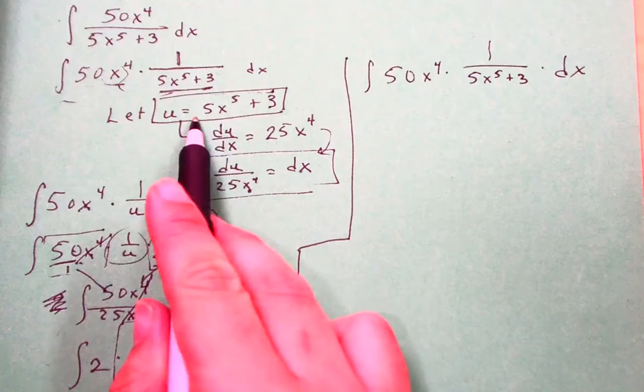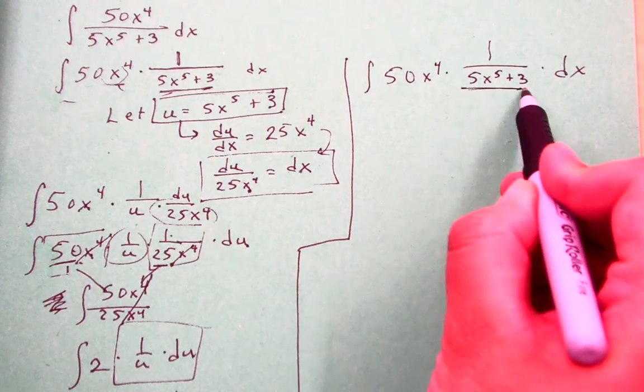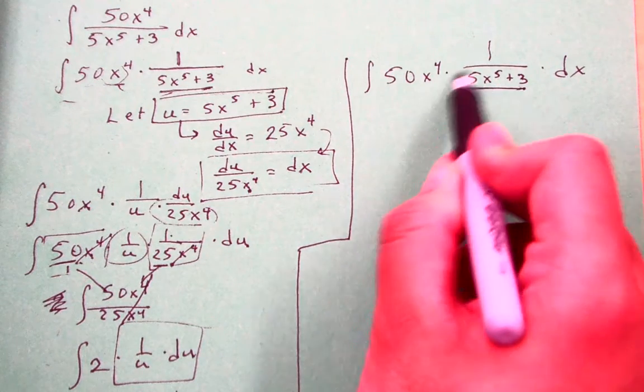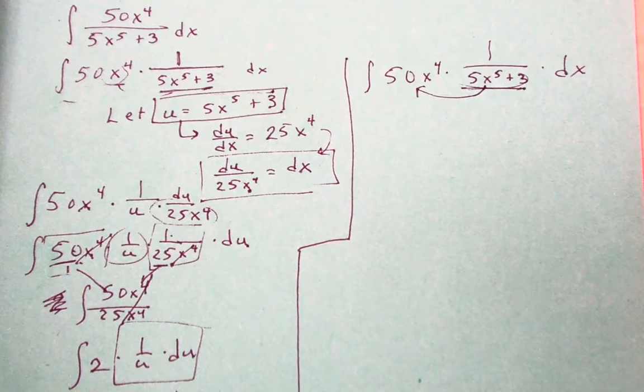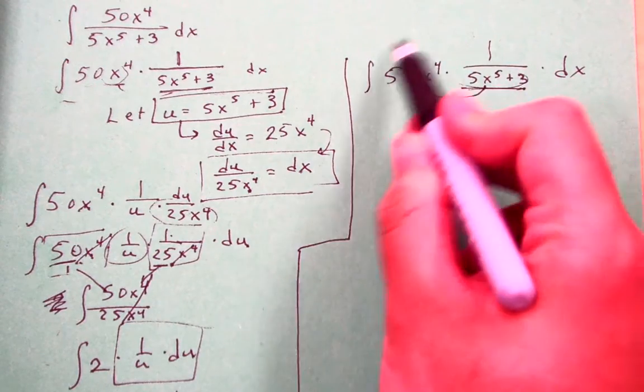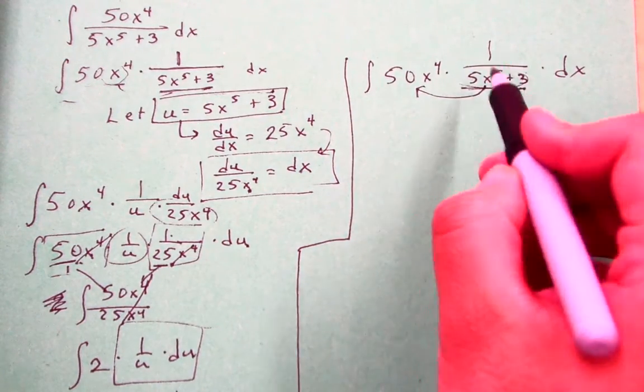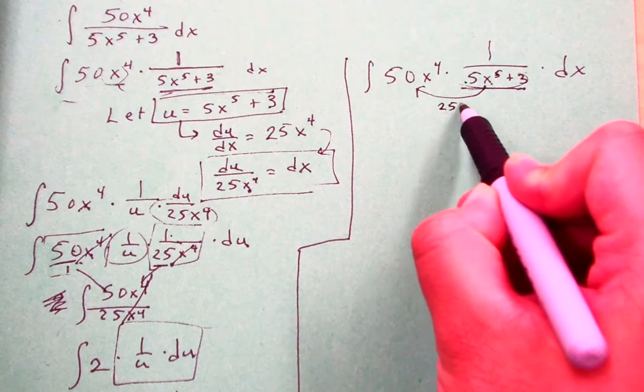I rewrote it as 50x to the 4th times 1 over 5x to the 5th plus 3 dx. So if you use substitution method, you can just dive in from there. Instead, I'm going to see if I can wiggle this a bit to make it work nicely. So the inside part is here. Do I have the derivative of the inside chained next to it? If I do, then I know the chain rule has been applied here. Because remember, this is the derivative of our answer function, which we've got to figure out. Well, what is the derivative of this part? Well, that would be 25x to the 4th. So I need 25x to the 4th.